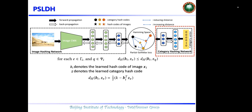Then, in the second step, we can directly use the learned category hash codes to supervise the image hash network learning.